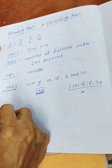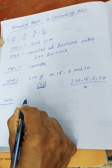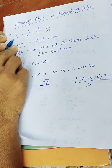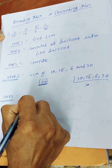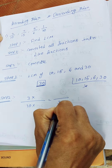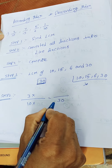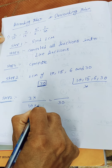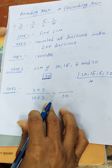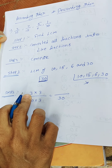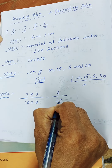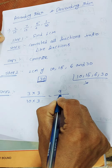Step 2: convert all fractions into like fractions. For 3 by 10 — the LCM is 30 — to get 30 we multiply 10 by 3. We multiply the numerator by the same number, so 3 times 3 is 9. That gives us 9 by 30.